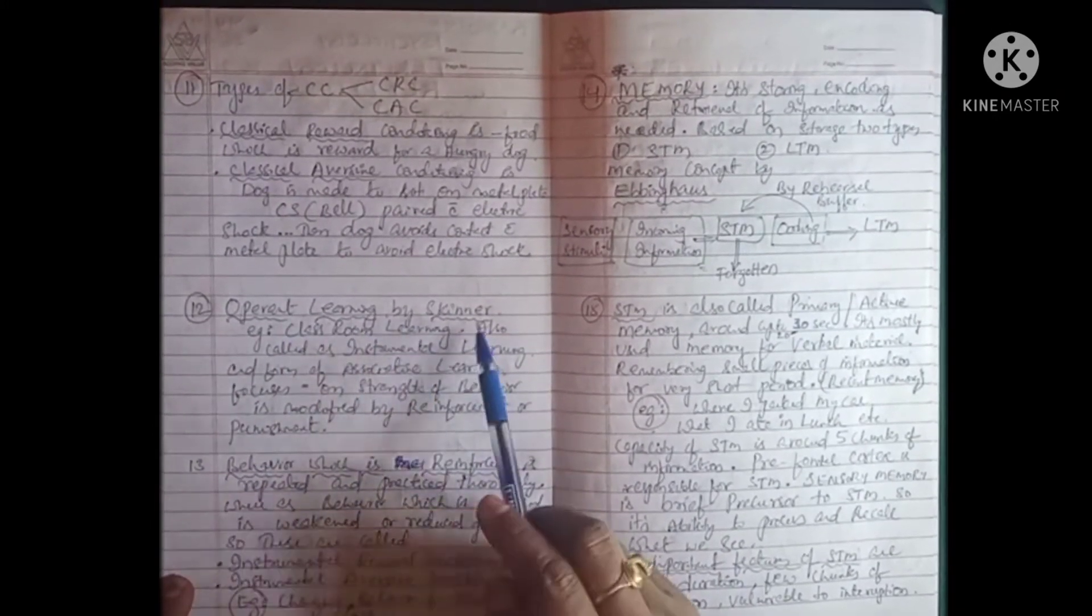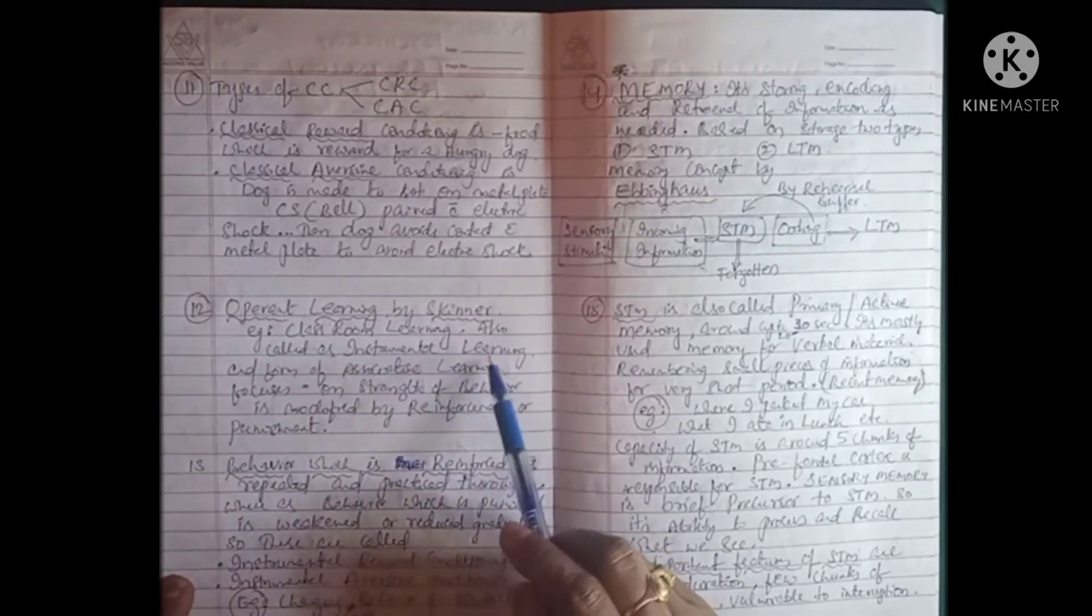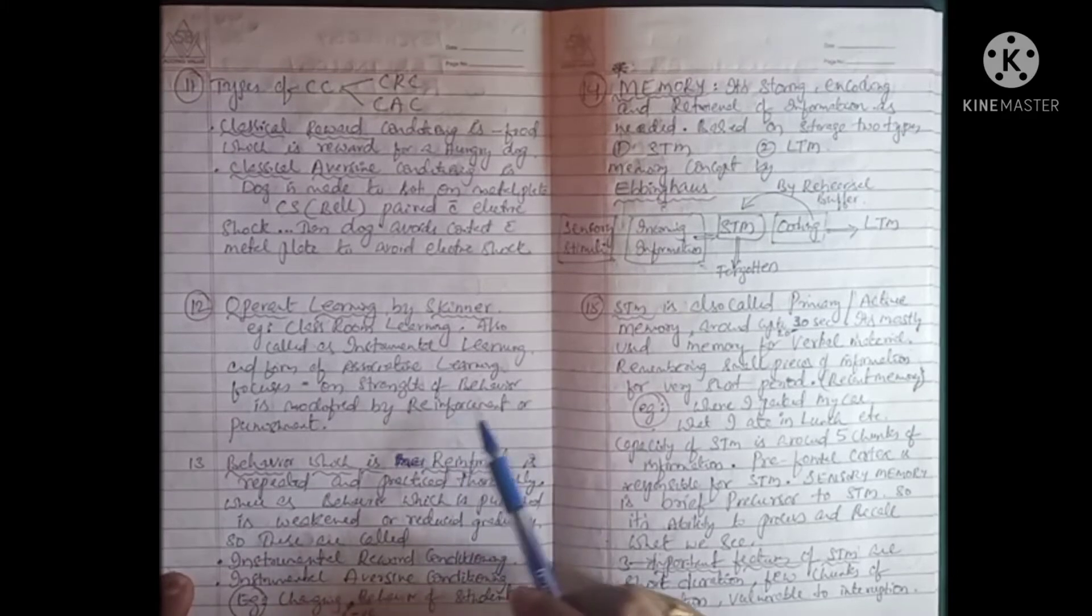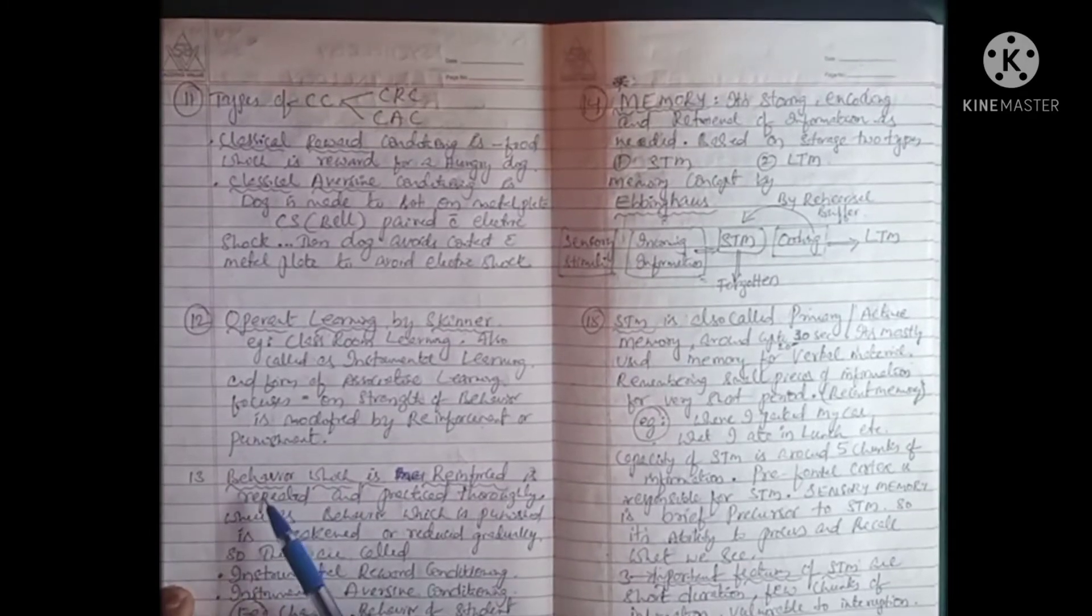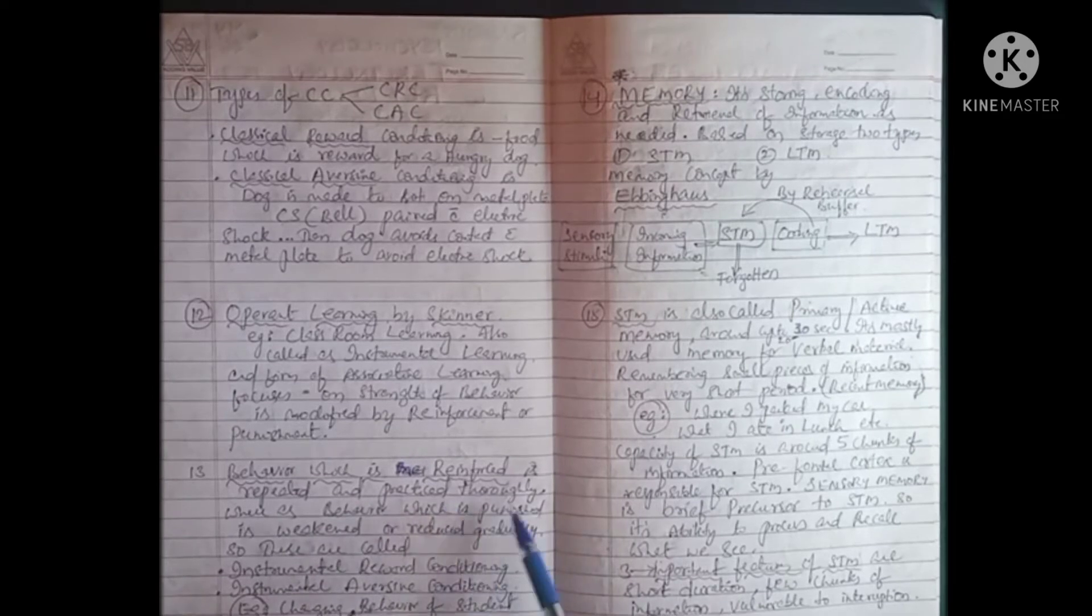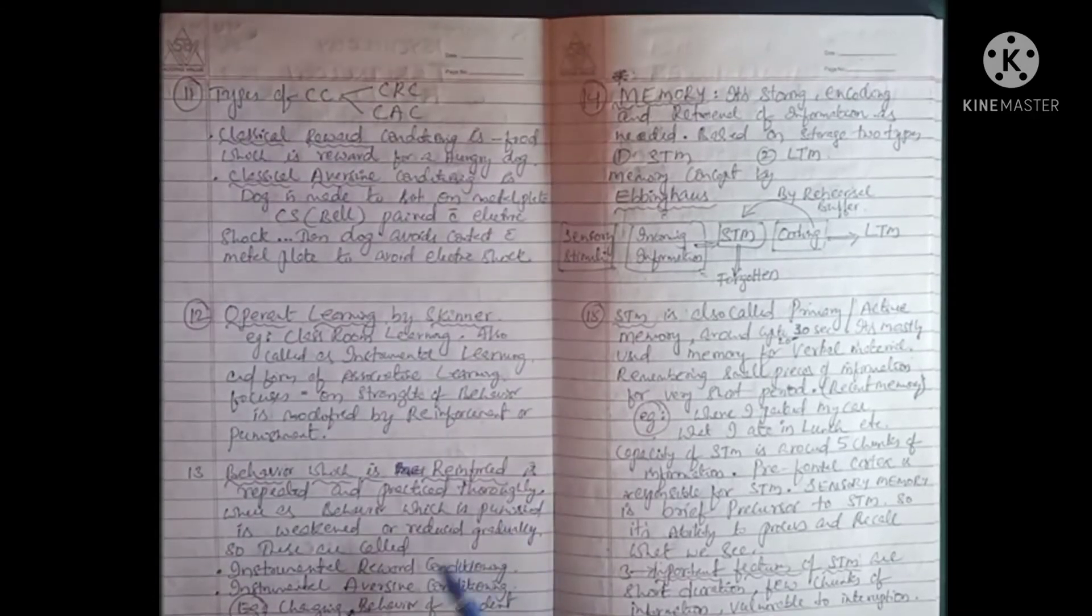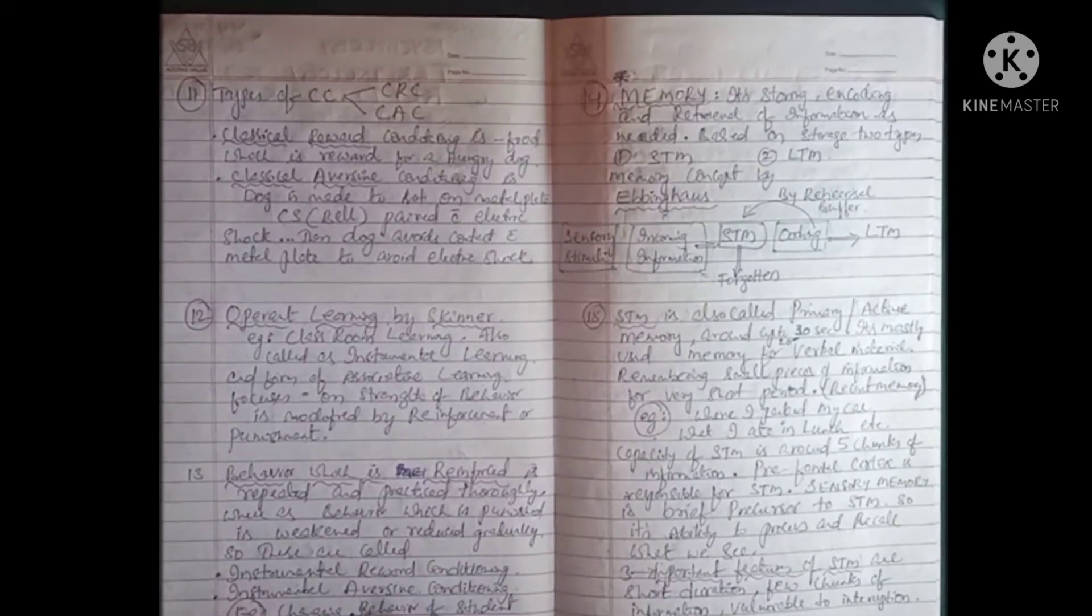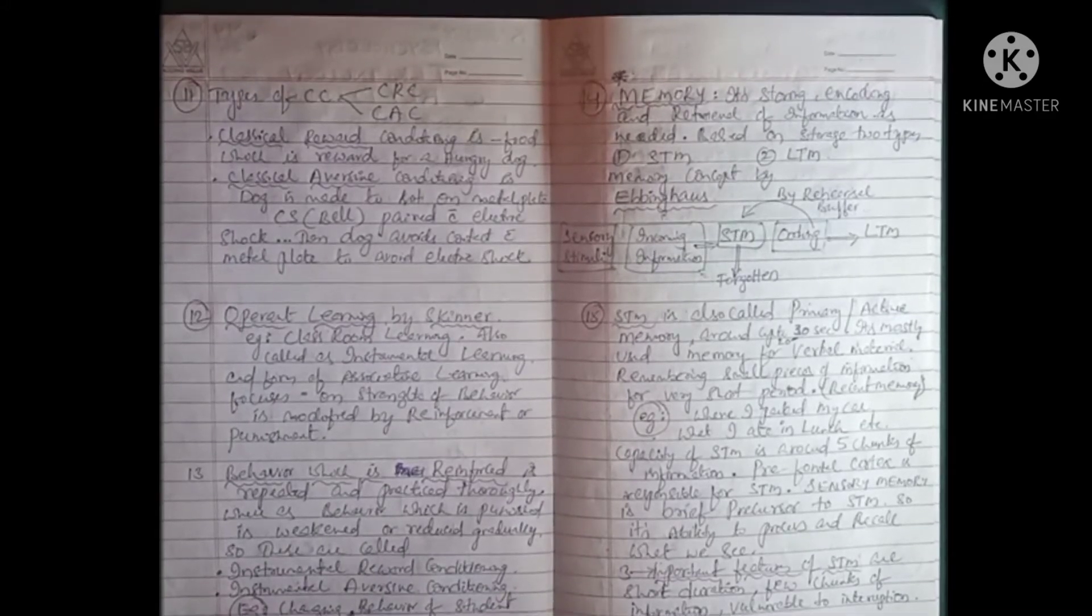Operant learning by Skinner, example classroom learning. It is also called instrumental learning and is the best form of associative learning. It focuses mainly on the strength of behavior being modified by reinforcement or punishment. Behavior which is reinforced is repeated and practiced thoroughly, whereas behavior which is punished is weakened or reduced gradually. These are called instrumental reward conditioning or instrumental aversive conditioning. Example: changing negative behavior of a student towards the positive side.